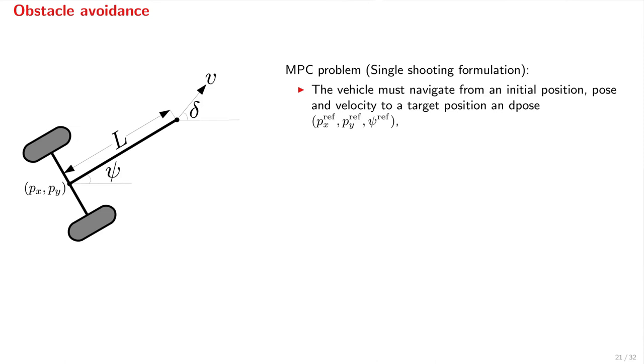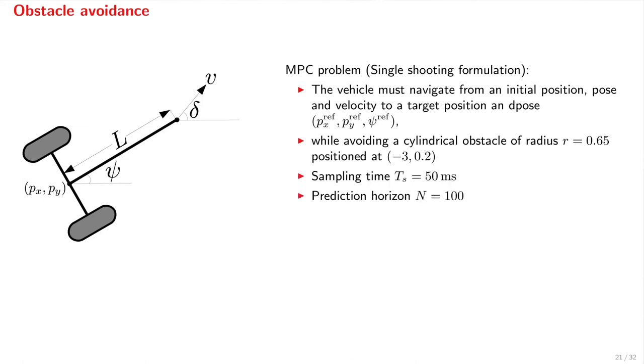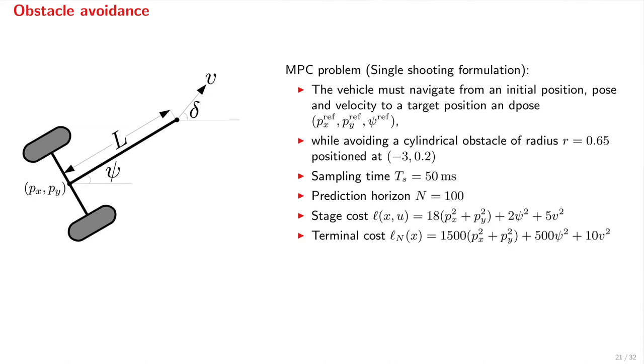The problem specification is as follows. First, the vehicle must navigate from an initial position, pose, and velocity to a target position and pose, while avoiding a cylindrical obstacle of radius 0.65 positioned at minus 3, 0.2. The sampling time is 50 milliseconds. The prediction horizon is 100. We use standard quadratic stage and terminal cost functions. We have a cost L delta that penalizes the successive differences of controlled actions. And lastly, the system inputs must satisfy certain bounds.